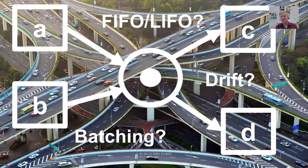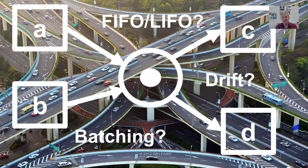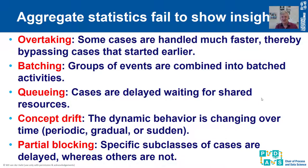We would like to see these more detailed behavioral properties. If you think of queues, we would like to see whether there is a first-in-first-out ordering discipline or a last-in-first-out. Are there concept drifts, meaning that the process is changing over time? We would like to see whether there's batching, where many process instances are first saved up and then in one go for many different cases the same activity is executed. Or there could be blockages. All of these things we do not see if we look at a single number like the average time.